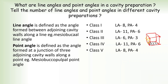You should know the number of line angles and point angles in different cavity preparations. Class 1: 8 line angles, 4 point angles. Class 2: 11 line angles, 6 point angles. Class 3: 6 line angles, 3 point angles. Class 4: 11 line angles, 6 point angles. Class 5: 8 line angles, 4 point angles. You should know these by heart.